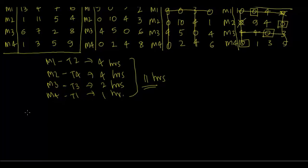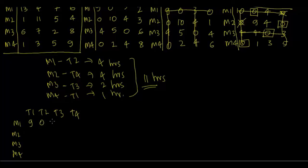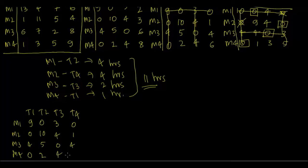So I'll copy this matrix involving four tasks and four machines. The values are: 9, 0, 3, 0; 9, 0, 3, 0; 0, 10, 4, 1; 4, 5, 0, 4; 0, 2, 4, 6. From this matrix we know we had to move further because we had not generated enough zeros.